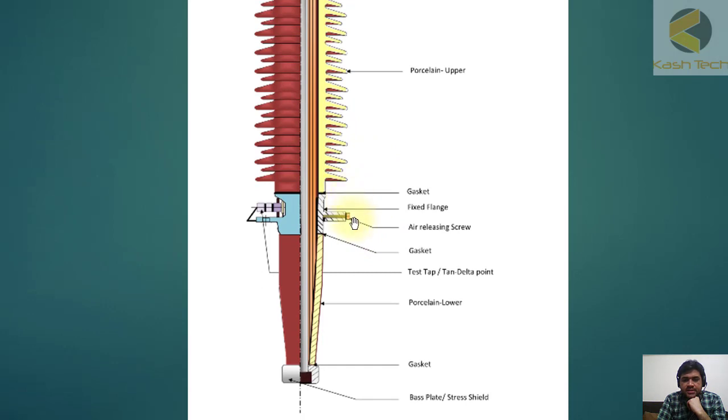Again there is a gasket, then there is a flange. Here is an air releasing screw. When a transformer is energized for the first time, air is trapped under the bushing, so bleeding is done at this point. Then we have a gasket. This point you can see is the test tap tan delta point for doing the tan delta measurement.